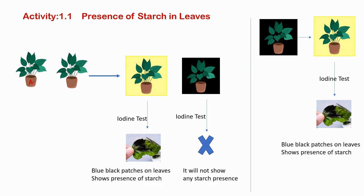We are choosing two potted plants — Plant A and Plant B. One is kept under sunlight and the other is kept in the dark for 72 hours, so this plant won't be able to do any photosynthesis or generate any food material. Plant A is kept in the sunlight and Plant B is kept in the dark.